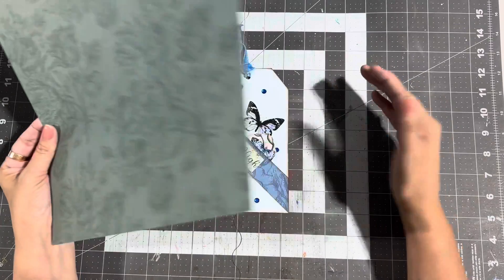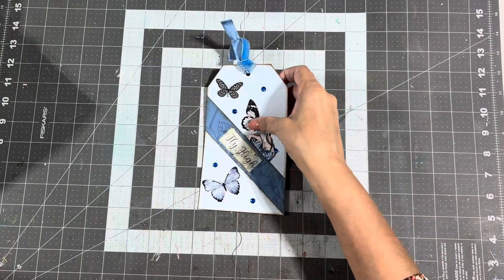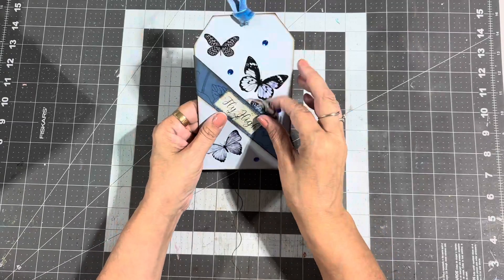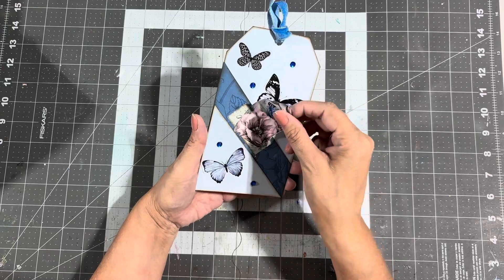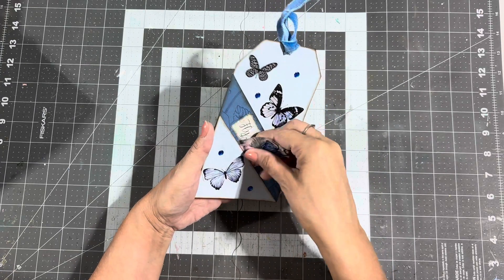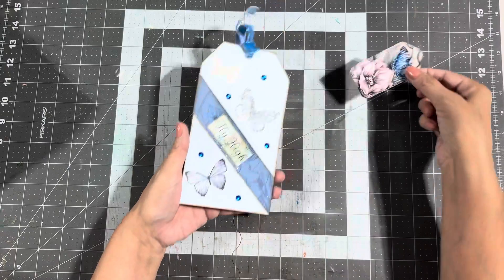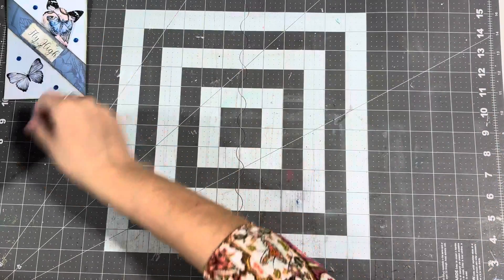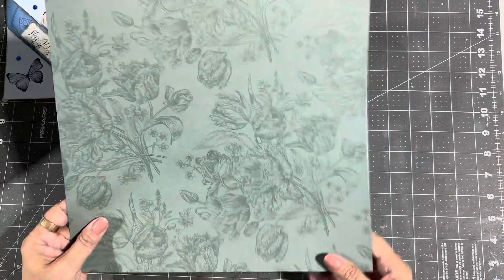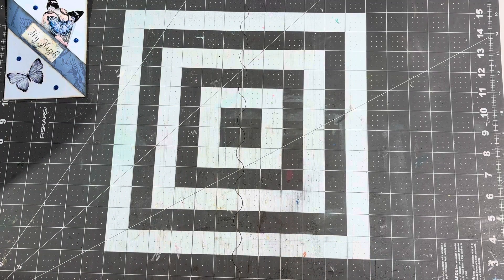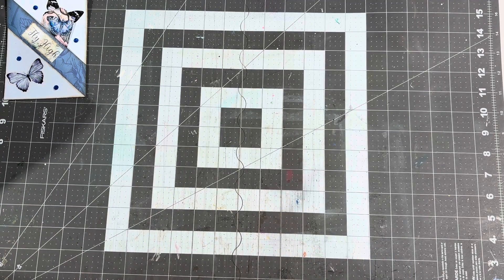So let's get started and this is what we're going to make today. They are large tags with diagonal pockets on the front, two different pockets on them actually. And what you're going to need for these cute little tags are, you need some two pieces of coordinating papers and I've got just a green one and a white one.